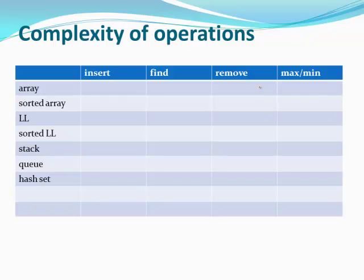Before we get there, let's talk about the complexity of operations with data structures we already know. It never hurts to revisit this table, because it gets you to think about common operations: insertions, searching, removing, and finding max and min. For an arbitrary unsorted array, inserting can be done in O(1) — just stick the element to the back. Finding something requires O(n), as does removing (you must find it and fill the hole), and finding max or min also requires O(n).